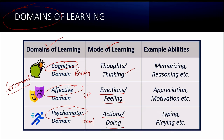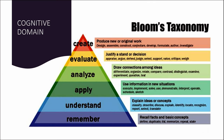The abilities to memorize, understand and reasoning all come under cognition. The abilities such as appreciation and motivation come under affective domain. Typing, playing, performing and experiment all come under psychomotor domain. These three are the common domains of learning and communication can also be considered as the fourth domain of learning.